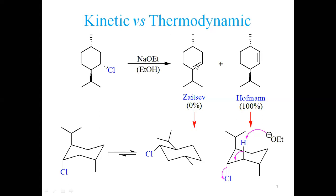In this example, removing hydrogen from the tertiary carbon yields a trisubstituted olefin; removing from the less crowded side yields a disubstituted olefin. Since the reaction is under thermodynamic conditions, the trisubstituted Zaitsev product is expected. However, in practice, the result is completely opposite — 0% Zaitsev product and 100% Hofmann product is isolated. This apparent contradiction is explained by stereochemical constraints.